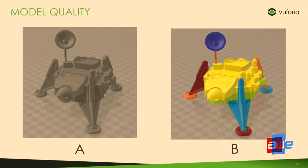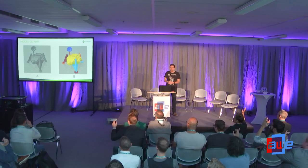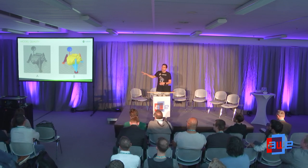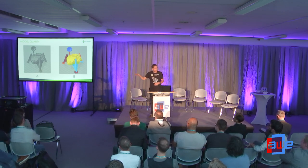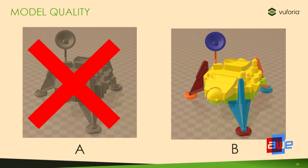Here we have two versions of the Viking model. Which would be a better candidate — version A or version B? The answer is B. If you apply different materials to the different parts of the model, you give the Euphoria Engine hints for distinguishing the various parts, which aids in the detection process.